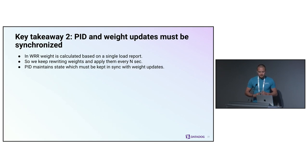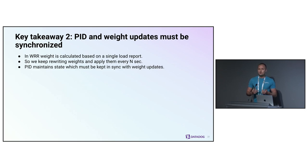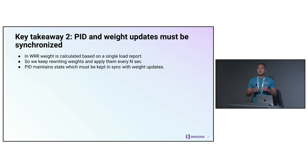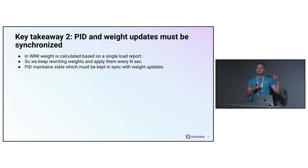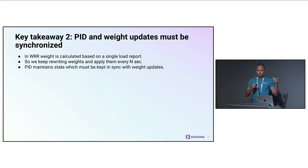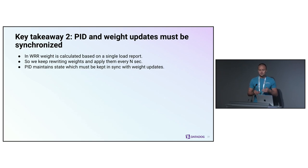A second key takeaway is that updates between PID and WRR weights must be synchronized. How WRR works is that whenever it receives a load report from any server, it immediately recalculates the weight for that server — weight updates are completely independent from each other and it maintains no state. PID does maintain state, so if PID updates and WRR weight updates get out of sync, it's something we want to avoid. WRR also has a background process that applies weights periodically by default, which can cause desynchronization.